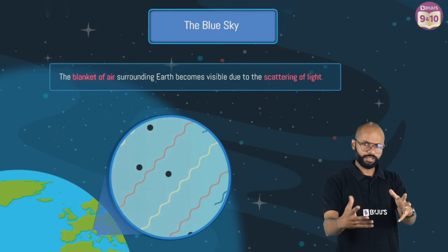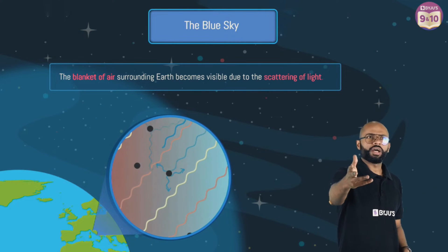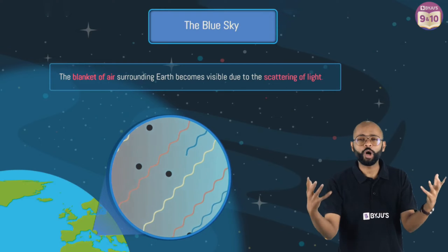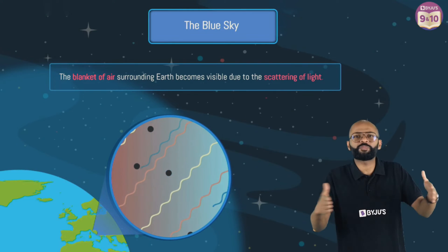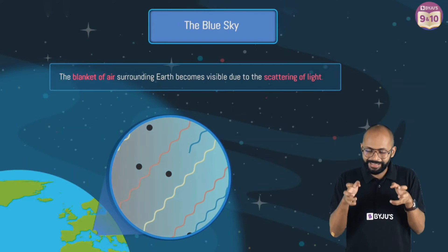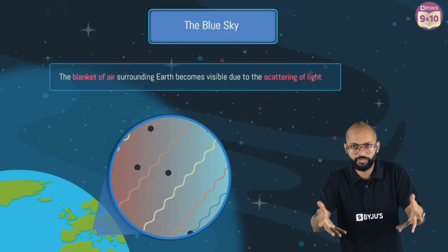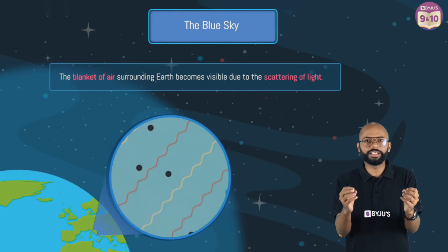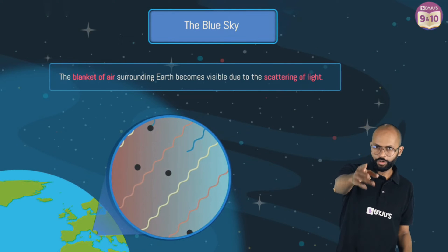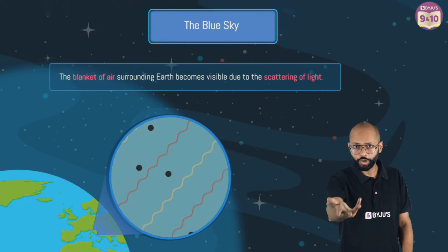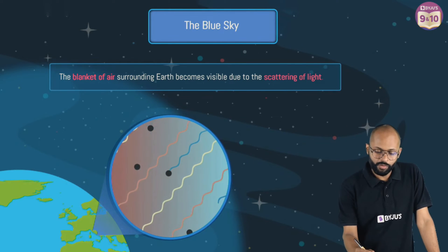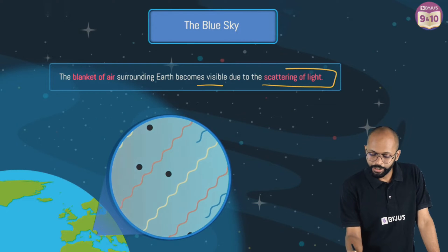It is because of scattering of light. Light from the sun is coming to the Earth — is it white or yellow? It's basically white. White light is a combination of seven colors, the spectrum VIBGYOR. When this light comes, it interacts with the molecules of the atmosphere and gets scattered. Whatever gets scattered, you will see that color. That's how the blanket of air surrounding Earth becomes visible due to scattering of light.